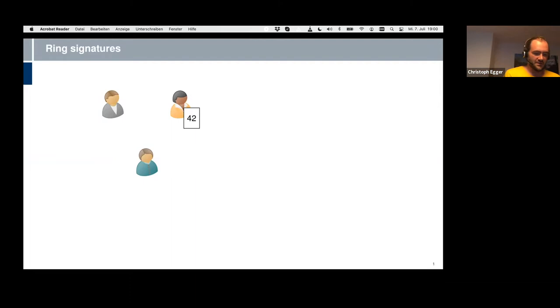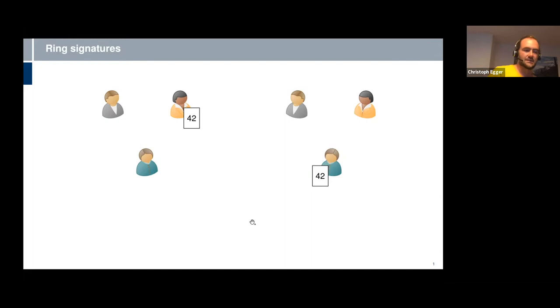We start from the concept of ring signatures that you have heard before. Here we have a primitive that is usually thought to be cryptographically secure. The idea is you have a bunch of people, and one of them is signing a message, and we want two settings to be indistinguishable - like this one and a second one where the message is signed by a different group member.